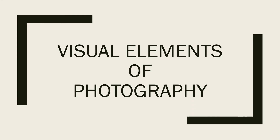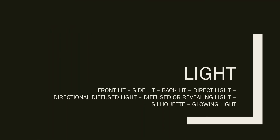Welcome to the visual elements of photography. There are a total of 39 different elements of photography categorized into about seven different categories. Today we're going to talk about our first category: light. For the purpose of this presentation, I've made my house as dark as I could possibly get it. So let's get started.